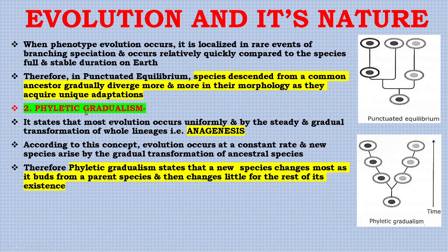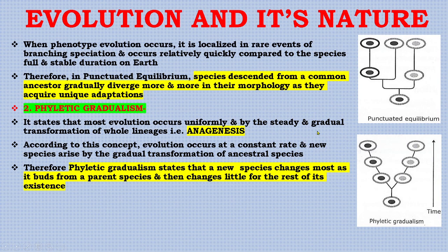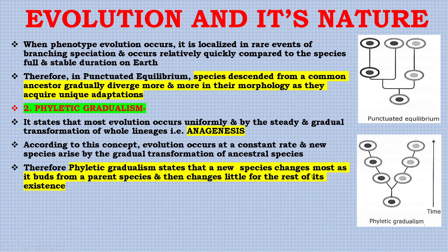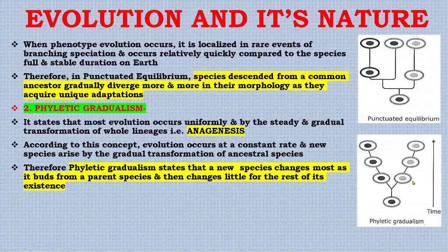Next is phyletic gradualism. This concept states that most evolution occurs uniformly and by the steady, gradual transformation of whole lineages — that is, anagenesis. According to this concept, evolution occurs at a constant rate and new species arise by the gradual transformation of ancestral species. Phyletic gradualism states that a new species changes most as it buds from a parent species and then changes little for the rest of its existence.